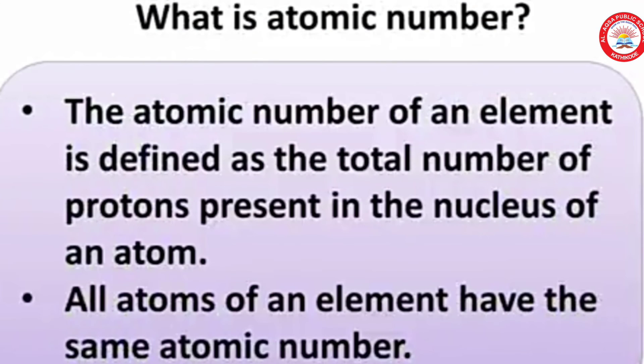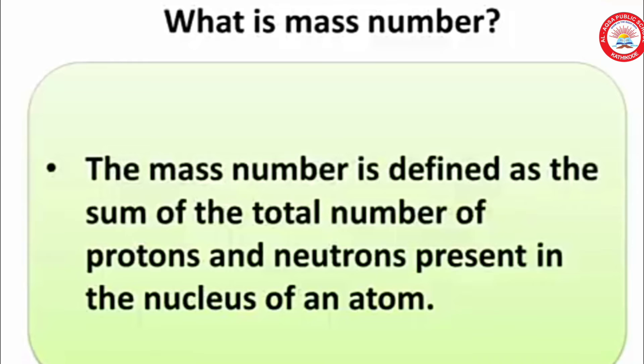In the previous class we discussed what is atomic number. The atomic number of an element is defined as the total number of protons present in the nucleus of an atom. And mass number. The mass number is defined as the sum of the total number of protons and neutrons present in the nucleus of an atom.